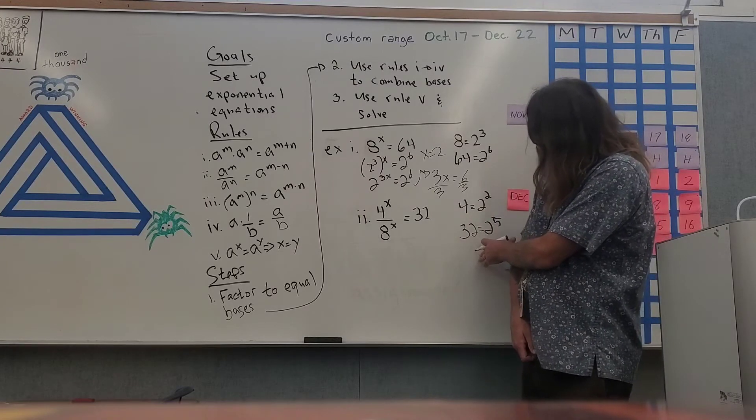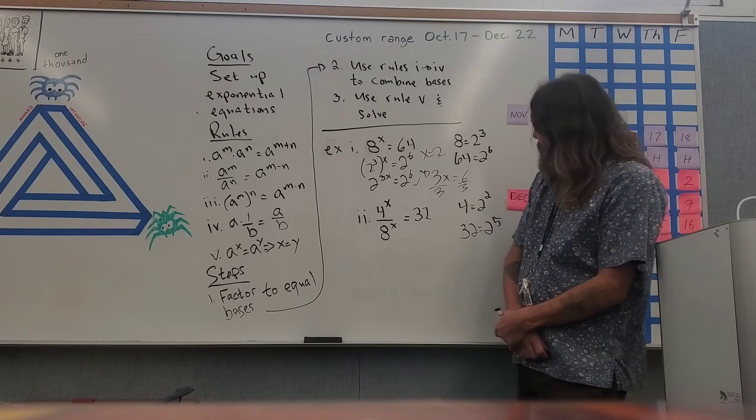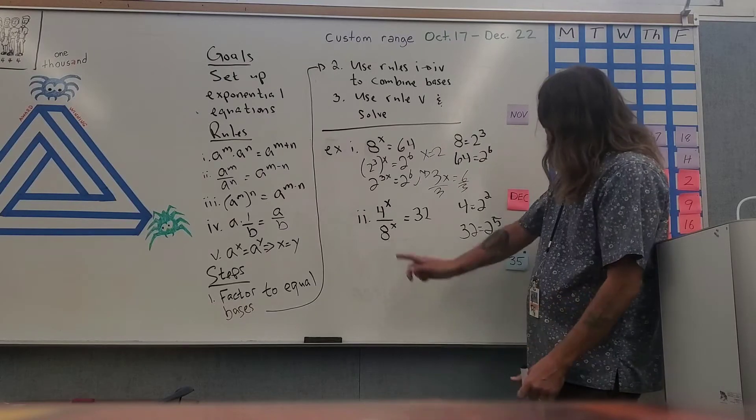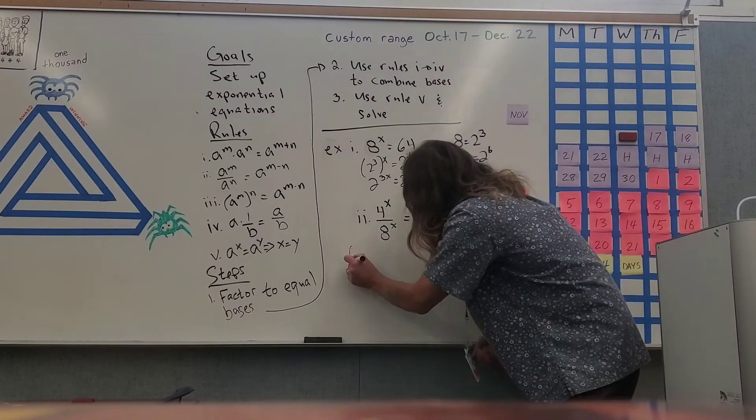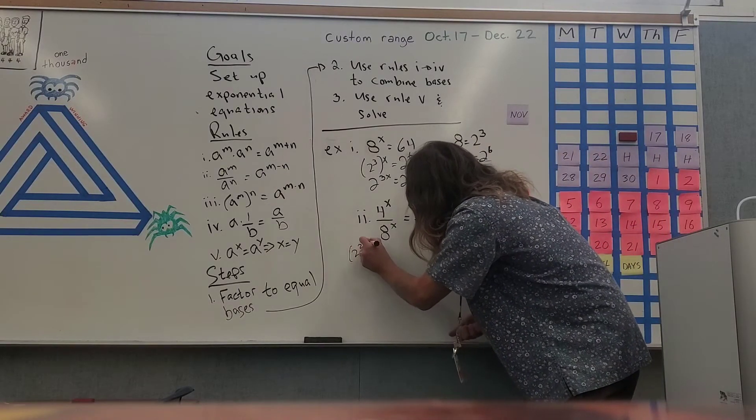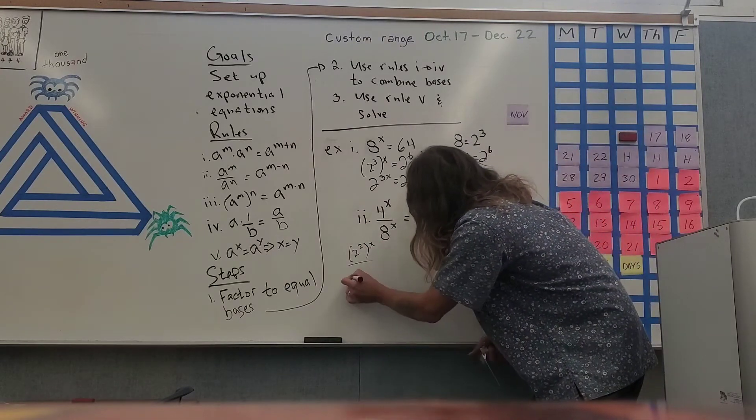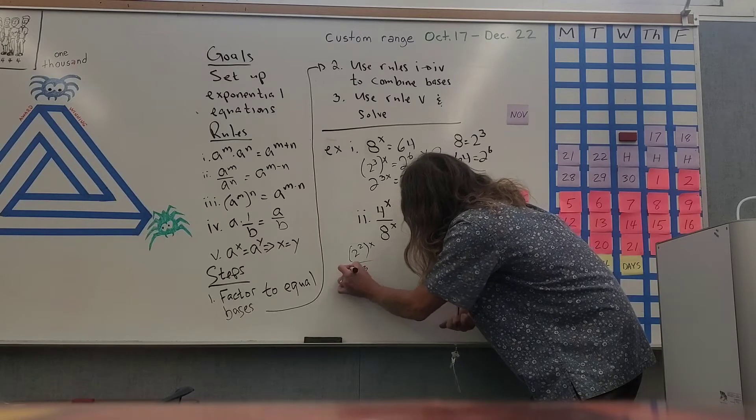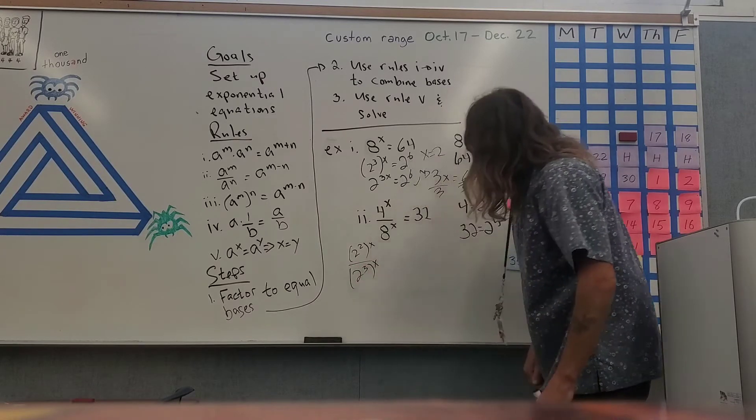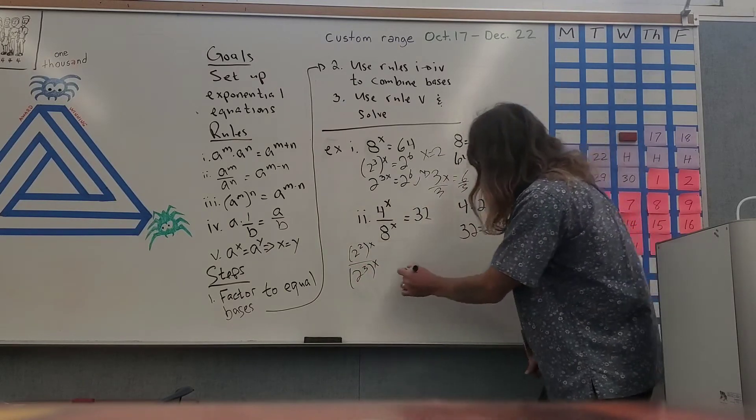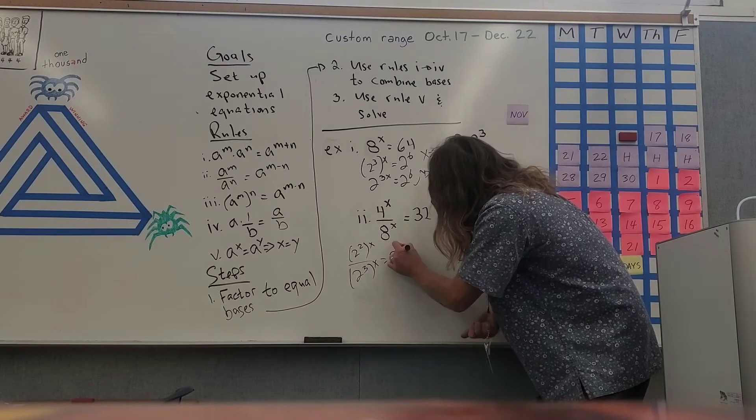So four is going to turn into two to the power of two raised to the x power. Eight is going to turn into two to the power of three to the x power, and 32 is going to turn into two to the power of five.